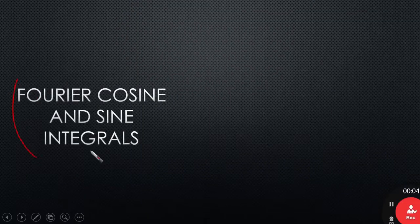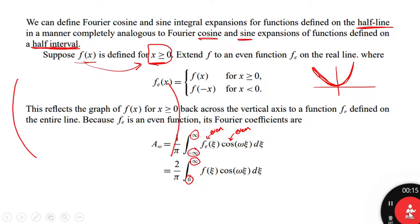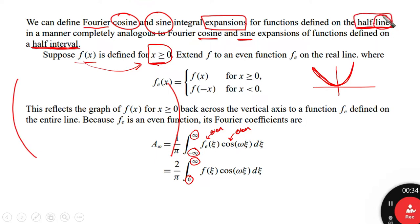We are going to talk in this video about Fourier cosine and sine integrals. We can define Fourier cosine and sine integral expansions — cosine only or sine only — for functions defined on the half line. This is analogous to Fourier cosine and sine expansions of functions defined on a half interval, as explained in previous videos.